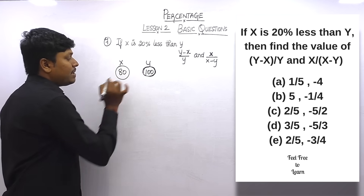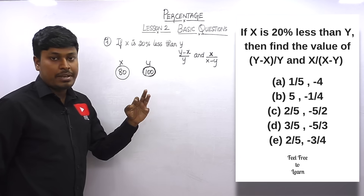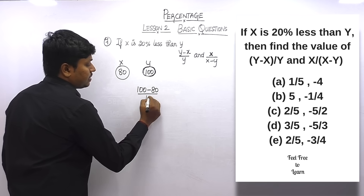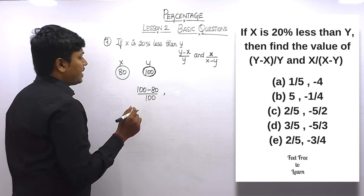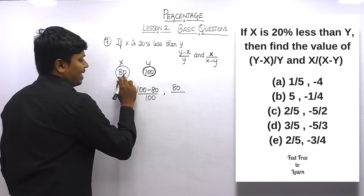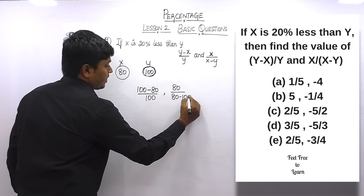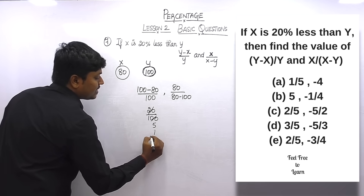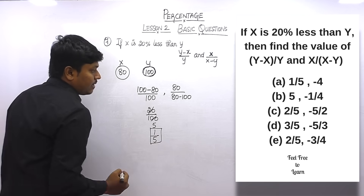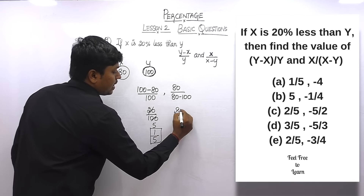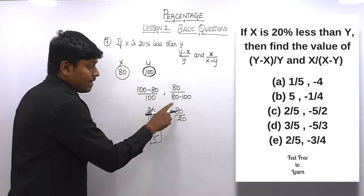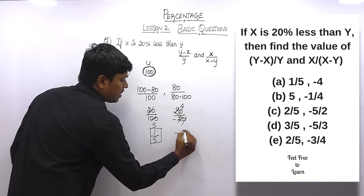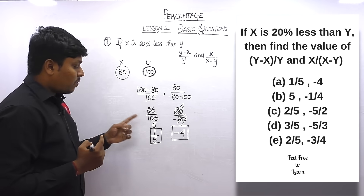Substituting y = 100 and x = 80: first expression (100 − 80)/100 = 20/100 = 1/5. Second expression: 80/(80 − 100) = 80/(−20) = −4. So the answers are 1/5 and −4.